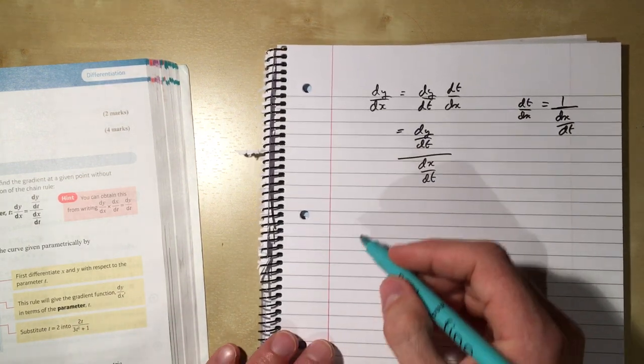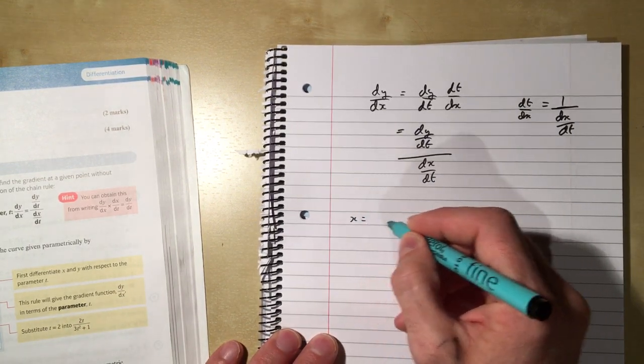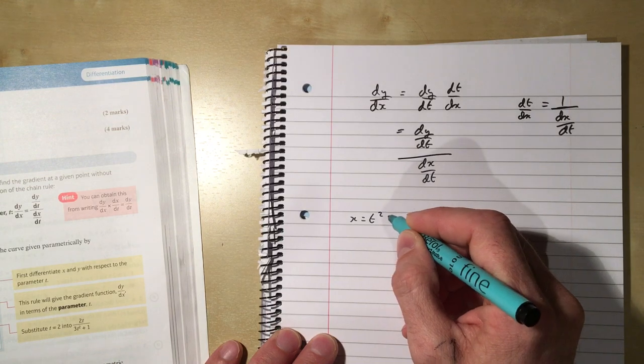Now why is that useful? Well, it's useful in this way: if I know that I have a parametric equation such as this one...